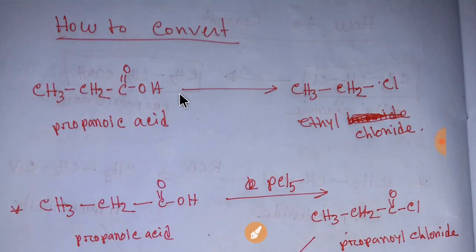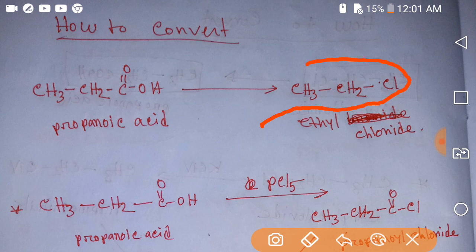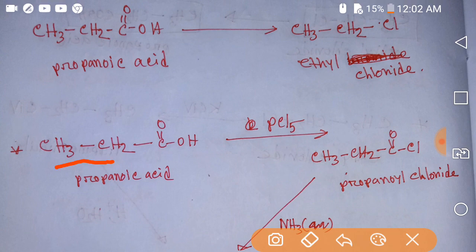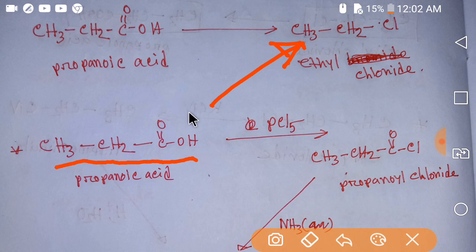Now we will learn how to convert propanoic acid to ethyl chloride. To do so, we have to deduct one carbon. The mother compound for deducting a carbon in the chain is an amide. So we have to convert this compound to an amide.